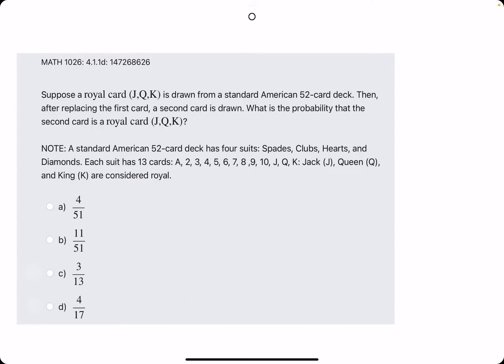In this one, they say a royal card, again, so 12 over 52 is drawn. And then after replacing the first card, a second card is drawn. What's the probability that that second card is a royal card as well? Well, if we replace the first card, that means there's still 52 cards. And if we replace the first card, then that means there's still a total of 12 royal cards to choose from.